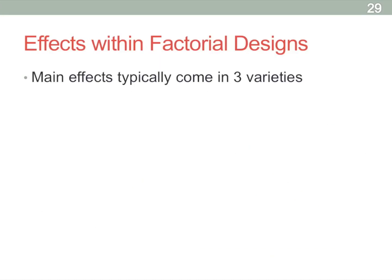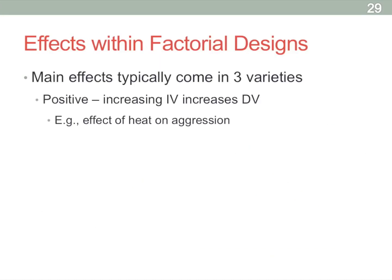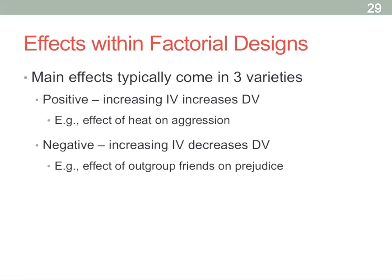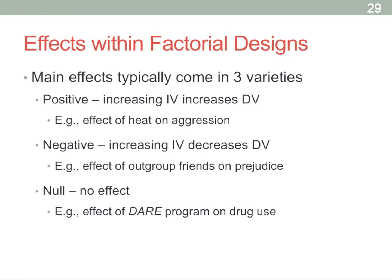Just as main effects tend to come in three different varieties — a positive main effect where increasing the strength of one independent variable increases the reaction of the dependent variable (for example, heat on aggression), a negative effect where increasing the IV decreases the DV (for example, more outgroup friends means less prejudice), and a null effect where no effect is found (like the DARE program on drug use).